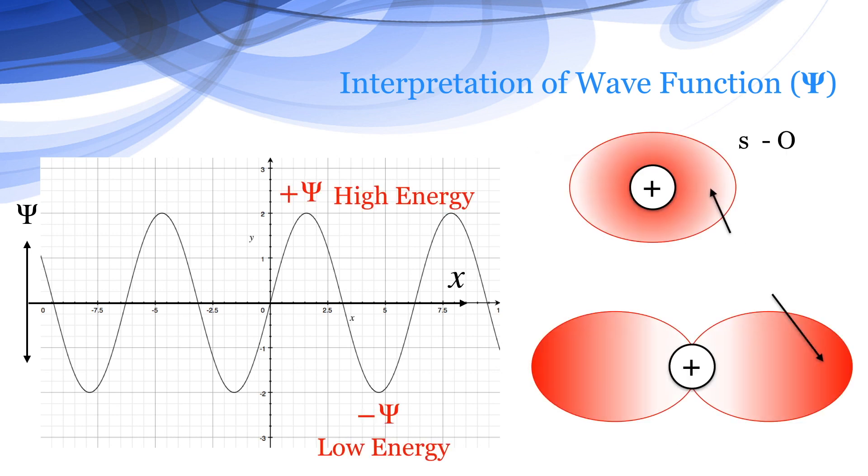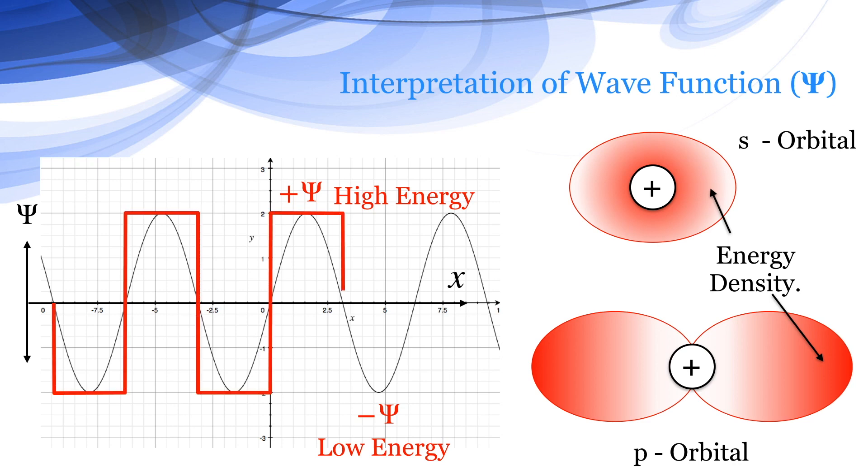So the wave functions for s orbitals and p orbitals are shown in the diagram, where you can find the energy density of the electron. But as energy is quantized, it cannot be smooth as shown in this wave.